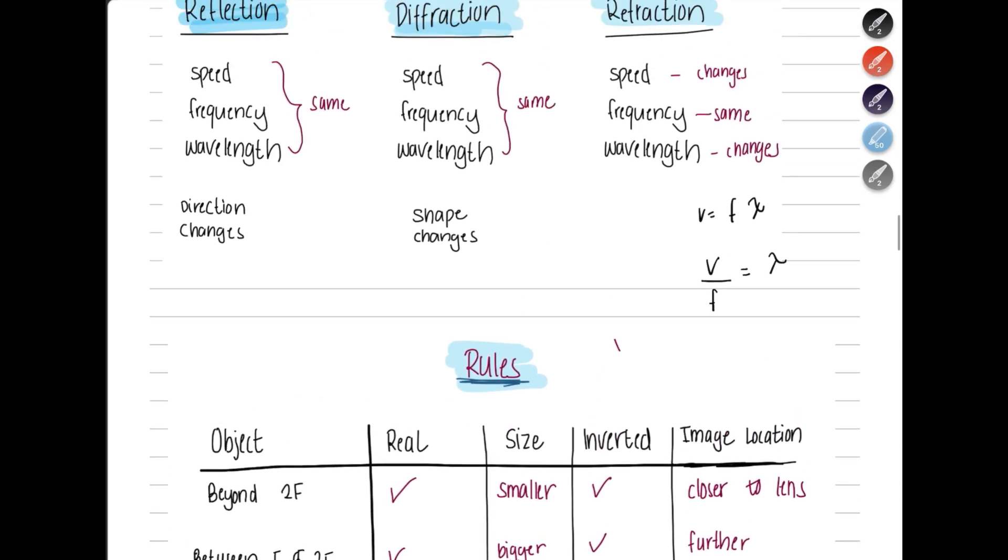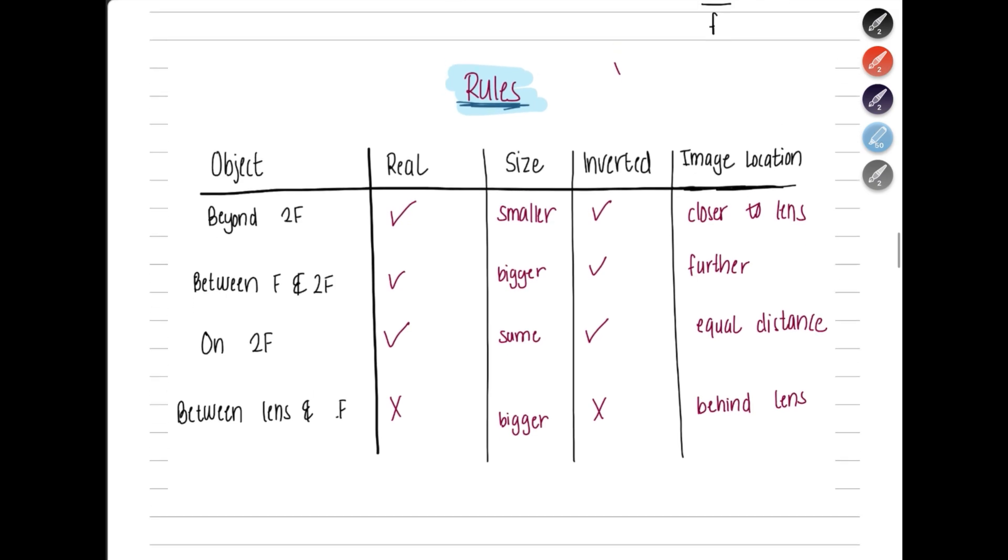Then these are some rules for what happens in lenses. When light rays pass through a lens, what happens? If your object is beyond 2F, the image is real, smaller, inverted. But the image is going to be closer to lens. If the object is between F and 2F, the image is real. It's bigger, inverted, but further away from the lens. If it's exactly on 2F, the image will be real. The size would be same. It will be inverted, but it would be equal distance to the lens as the object.